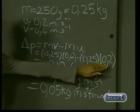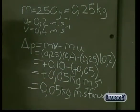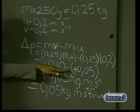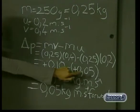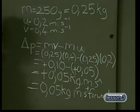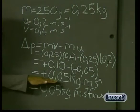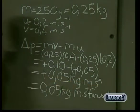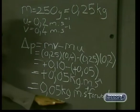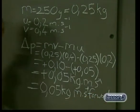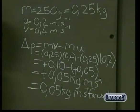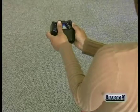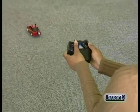The final velocity is plus 0.4 meters per second forwards. So the change in momentum is 0.10 kilogram meters per second minus 0.05 kilogram meters per second. The direction of change in momentum is forwards. The final answer is given with the direction in words: 0.05 kilogram meters per second forwards. Notice that the resultant force that accelerated the car acts in the same direction as the change in momentum.